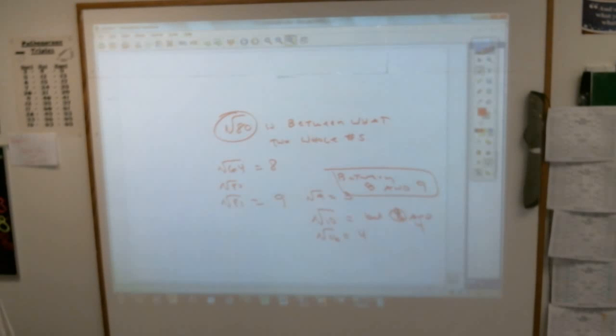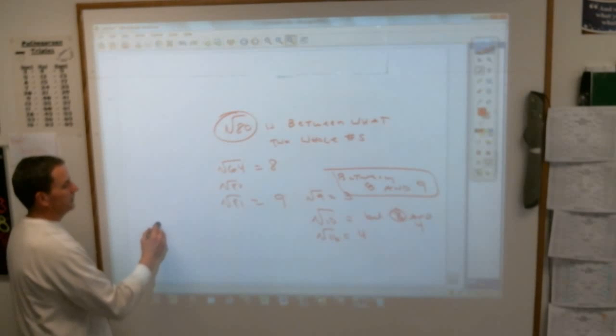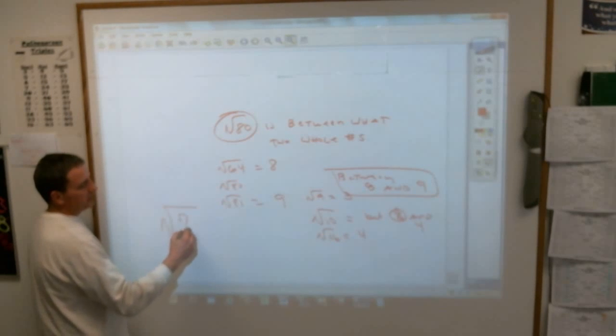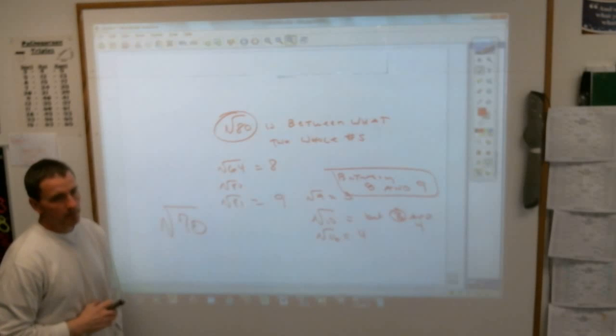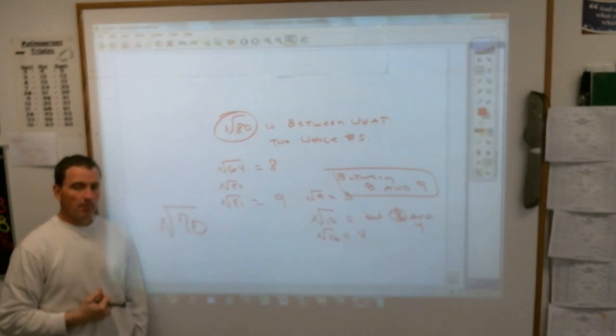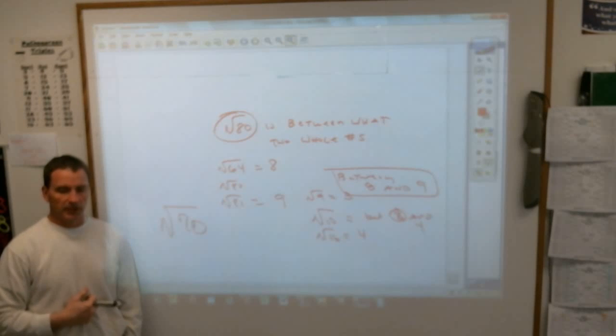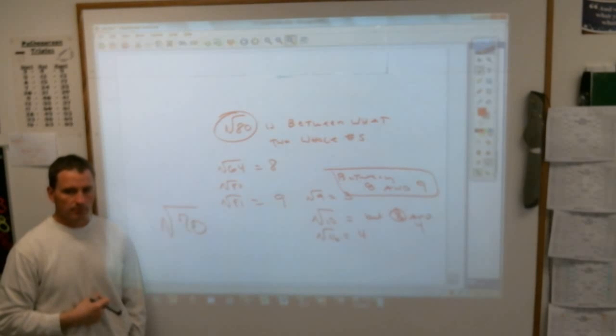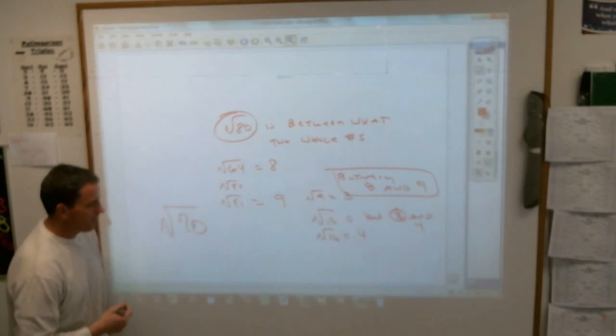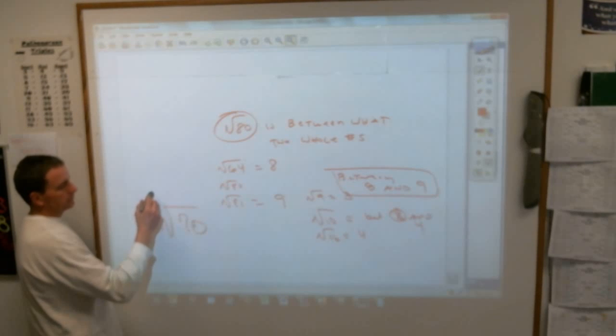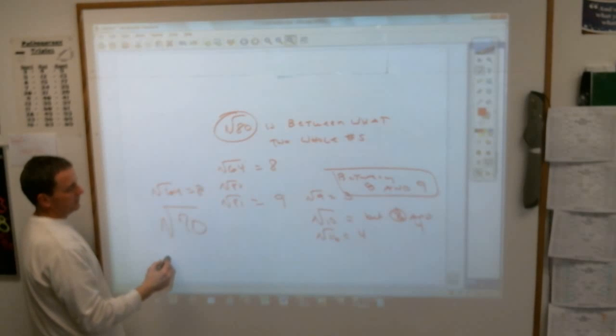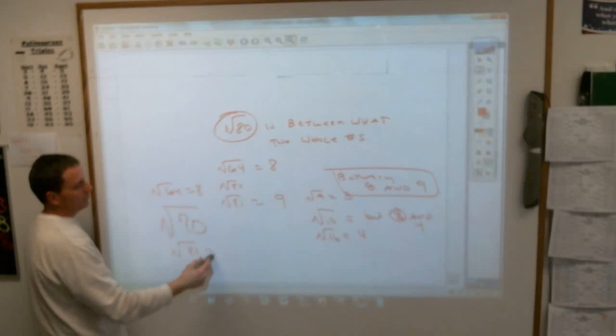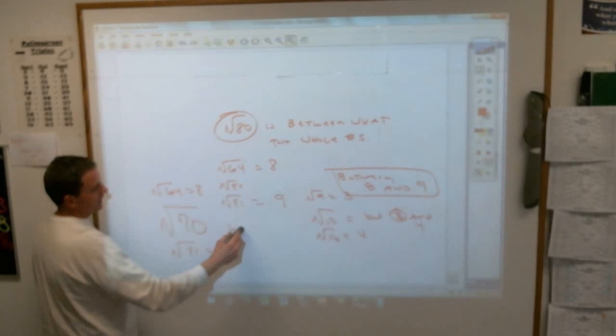How about 70? The square root of 70 would be between what and what? Looking at your perfect squares. Isabel? Between 9 and 8. Yeah, because 64, the square root of 64 is 8, and 9 is the square root of 81. So it has to be between 8 and 9.